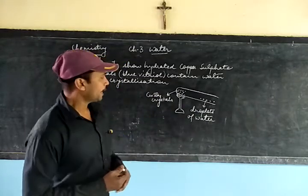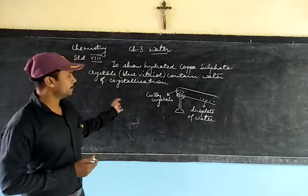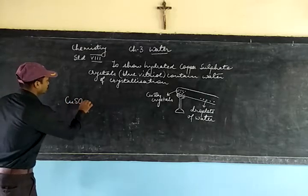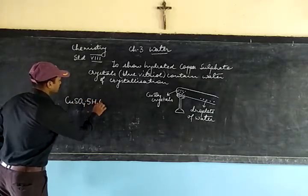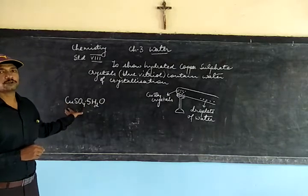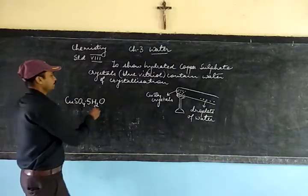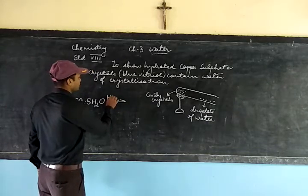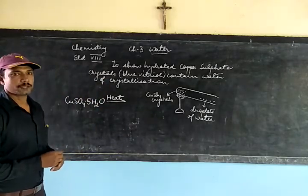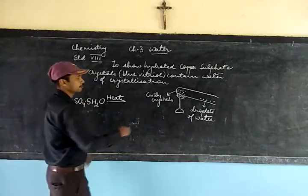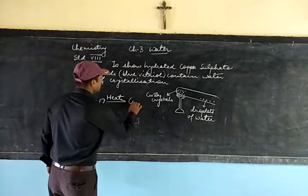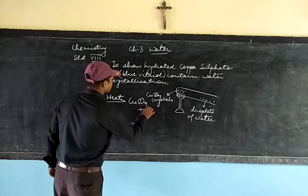We can write this in the form of an equation: CuSO4·5H2O on heating gives CuSO4 plus 5H2O. The 5 molecules of water associated with the salt give it its crystalline shape, and on heating these water molecules are released and seen as droplets near the mouth of the test tube.